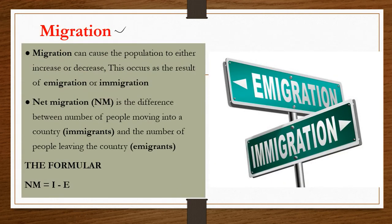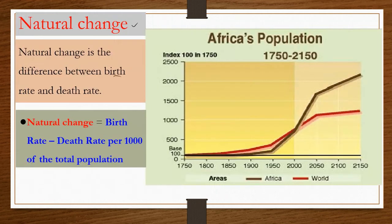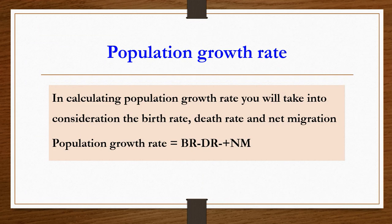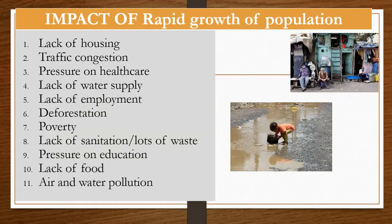Migration can cause the population of a country to either increase or decrease. Emigration refers to people leaving a country, and immigration refers to people coming in. Net migration equals immigration minus emigration. Combining natural population growth and net migration gives us the population growth rate. The formula is: population growth rate = birth rate minus death rate, plus or minus net migration. Net migration can yield a positive or negative value, which you substitute into the formula.